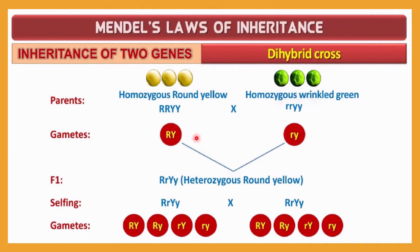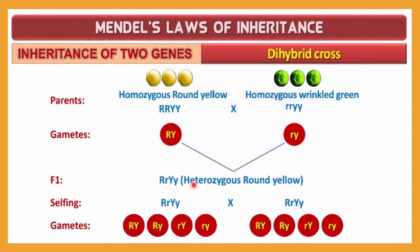This is sexual reproduction, so fusion of these two gametes occurs, resulting in zygote formation. The first filial generation (F1) will have capital R small r, capital Y small y — heterozygous. Small r is suppressed in the presence of capital R, and small y (green) is suppressed in the presence of capital Y (yellow). As a result, the F1 generation will have round and yellow seeds.